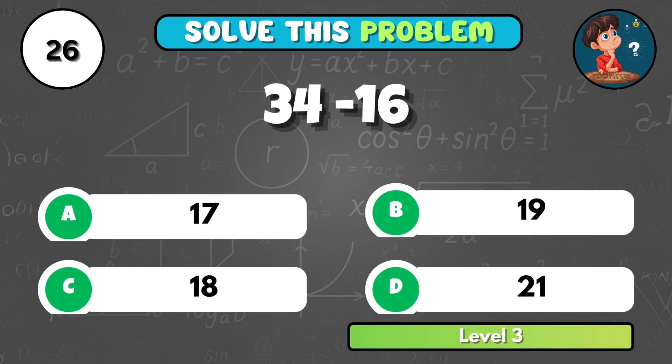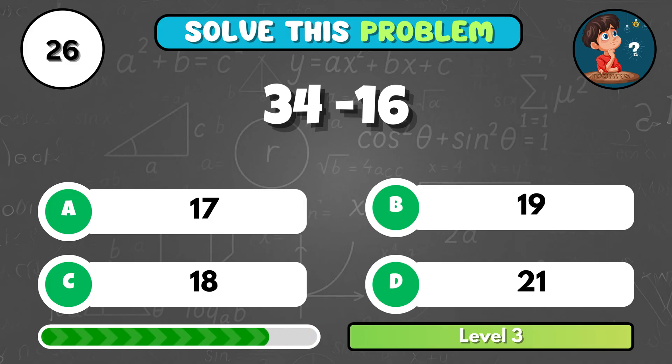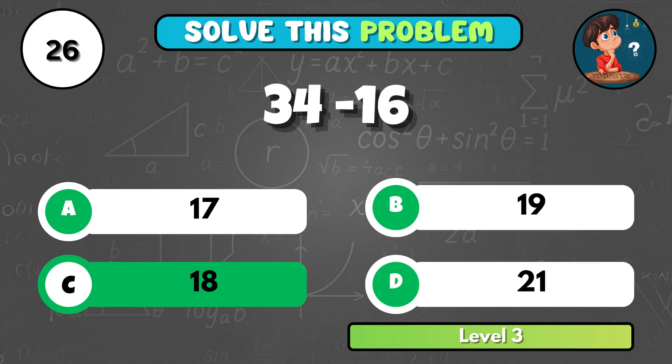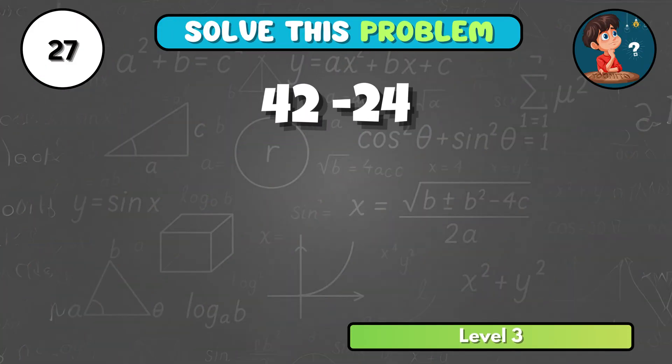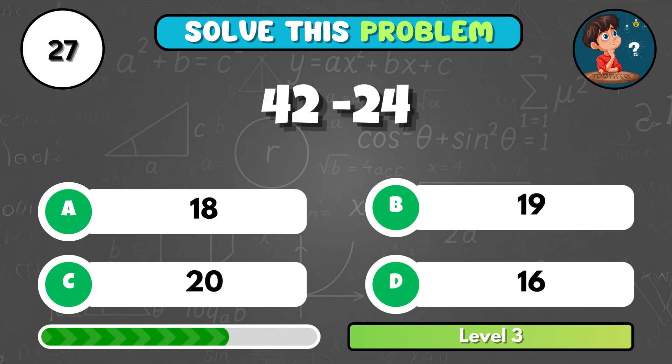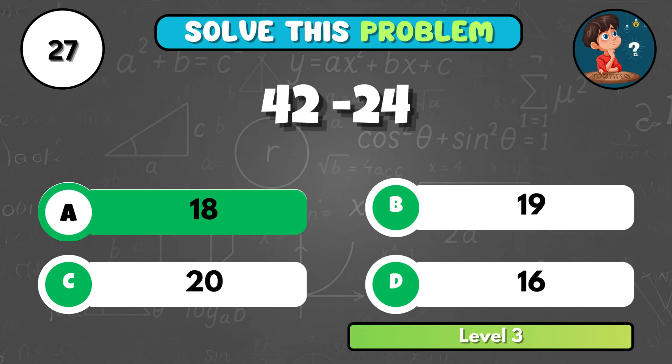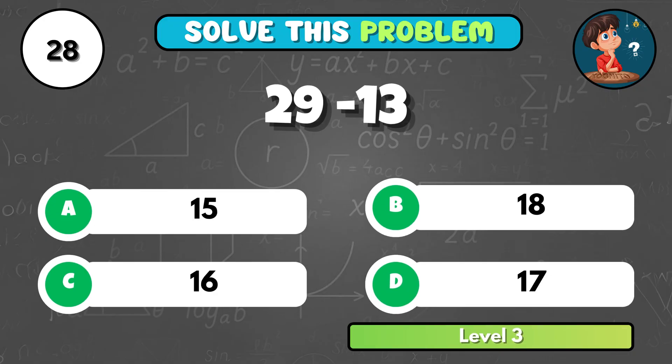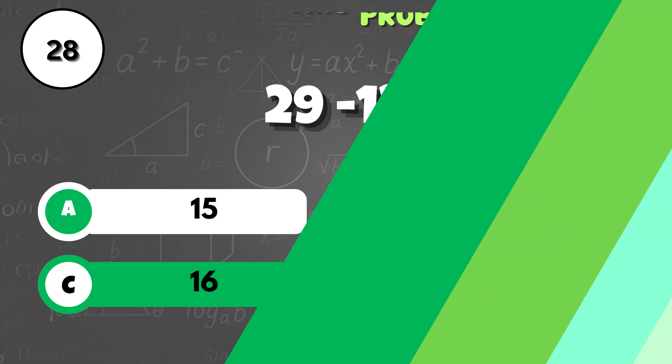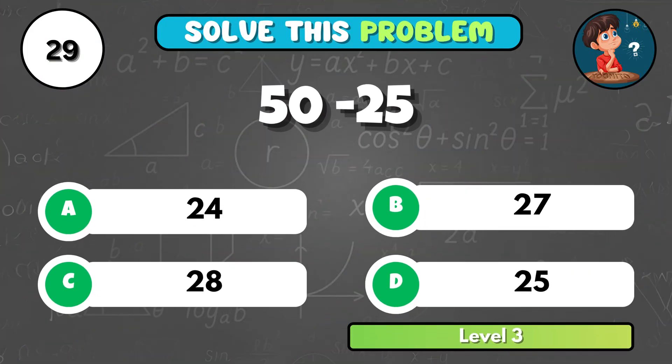Getting harder now! What's 34 minus 16? It's C, 18! Can you quickly figure out 42 minus 24? That equals A, 18! Let's try this one, 29 minus 13 equals what? It's C, 16!